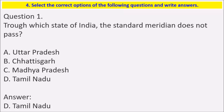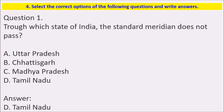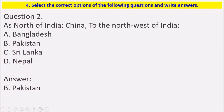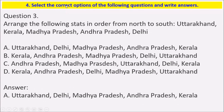Question 4: Select the correct options. The first one is: through which state of India does the Standard Meridian not pass? Options: Uttar Pradesh, Chhattisgarh, Madhya Pradesh, and Tamil Nadu. The Standard Meridian does not pass through Tamil Nadu. To the north of India is China; to the northwest of India is Pakistan.